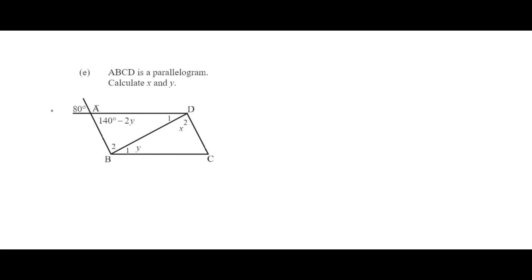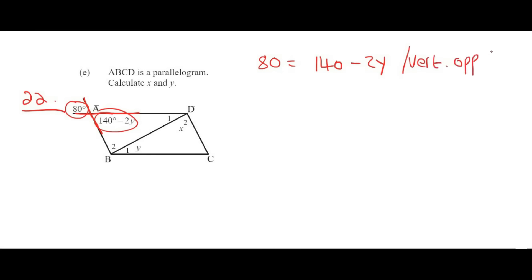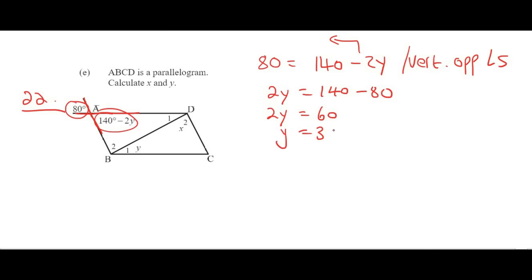The next question is also on page 22. We want to find both X and Y. An easy way to find Y is to notice that two lines are intersecting, and the vertically opposite angles are equal. So 80 equals 140 minus 2Y. Solving: 2Y equals 60, so Y equals 30 degrees. Now that we have Y, we can find the angles: substituting Y equals 30 gives 140 minus 60 equals 80 degrees for the other angle.